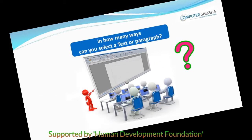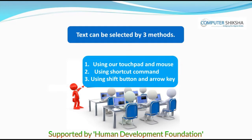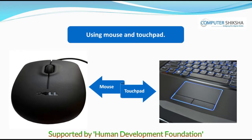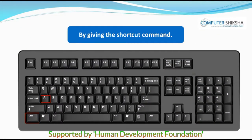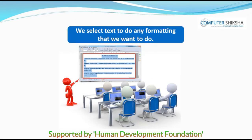In how many ways can text be selected? Text can be selected by three methods: using our touchpad, by giving a command, or using the arrow keys. We select text to be able to do any formatting that we want to do.